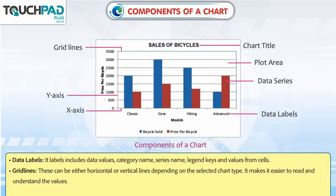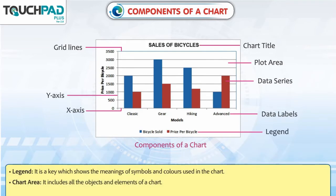Grid Lines: These can be either horizontal or vertical lines depending on the selected chart type. They make it easier to read and understand the values.